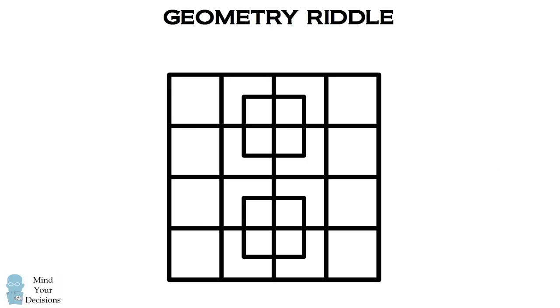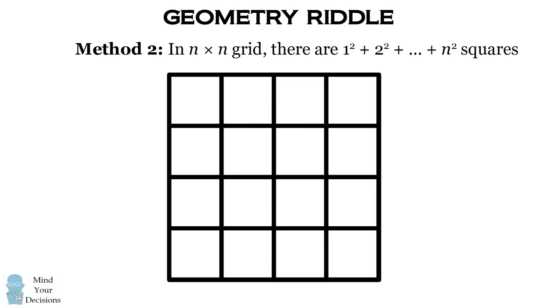Now there's a shortcut we could use if we're going to do problems like this. If you have an n by n grid, there will be 1² + 2² + ... + n² number of squares.